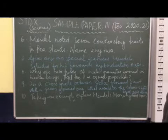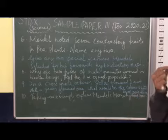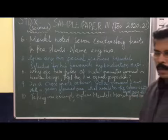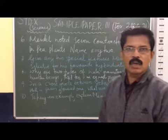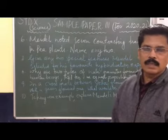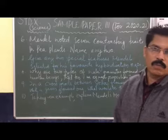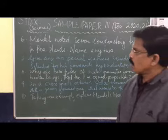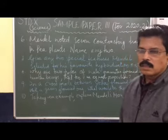Seven contrasting traits Mendel noted: you can write stem height. Stem height is a contrasting trait and it has two contrasting characters - we can say tall and short or dwarf.